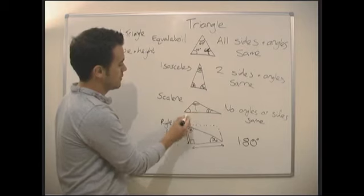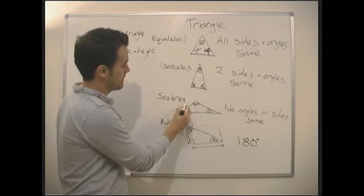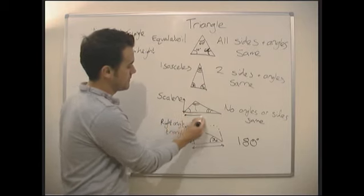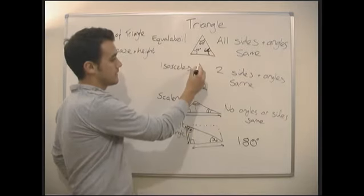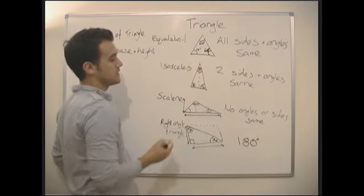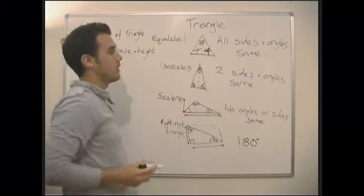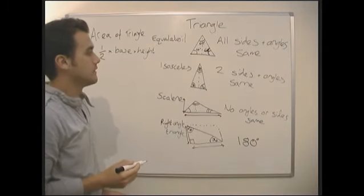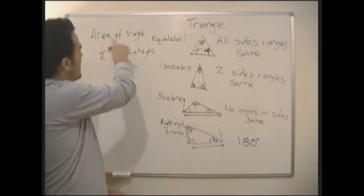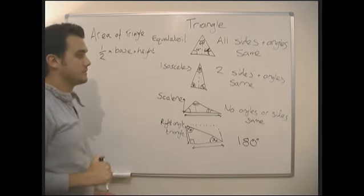Obviously, with the scalene here, we've got the height here and the base here. Again, there's our height with our isosceles. And there's our height with our equilateral triangle. So, area of a triangle is just half base times height.